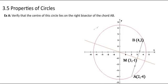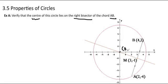Remember that verifying means we are just proving it for one specific case, and this is the specific case they've given us. They've actually given us the midpoint as well, which we could verify, but it is correct. The property is that the right bisector of a chord will go through the center of the circle. The center of the circle is (0, 0), so I'm going to find the right bisector and then prove that (0, 0) is on that line.